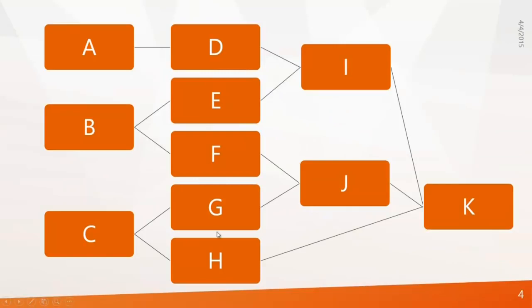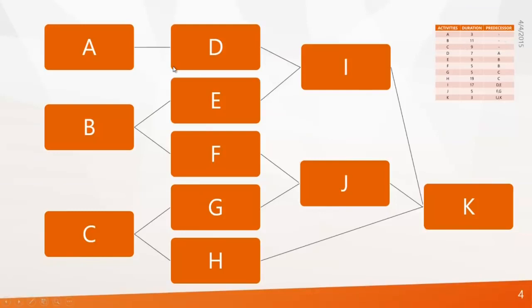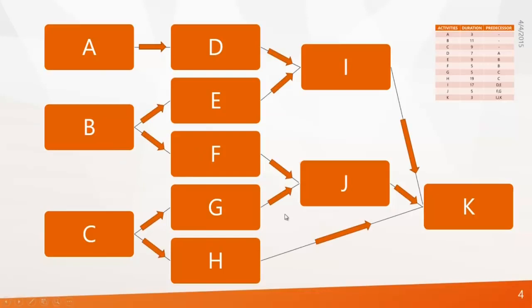Now let's look at the example. I have arranged all activities based on their relationships and logic. The first three activities have no predecessors, meaning they start simultaneously. Activity D starts only after completion of Activity A, and activities E and F start only after B. This is the logic used to sequence activities in construction — all activities need to be arranged based on logic.